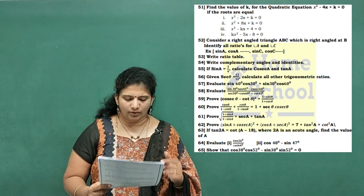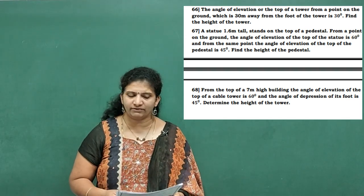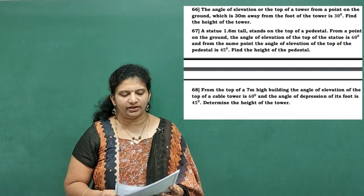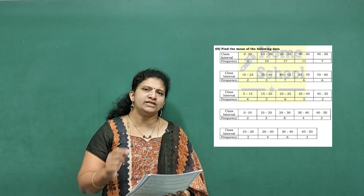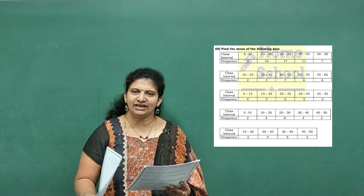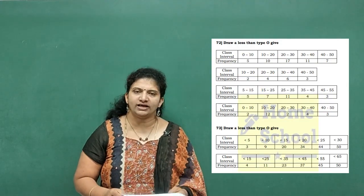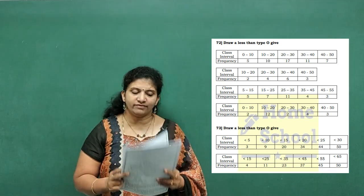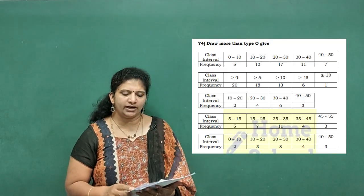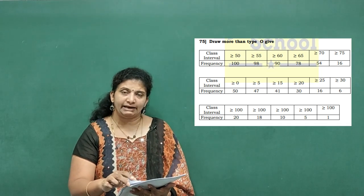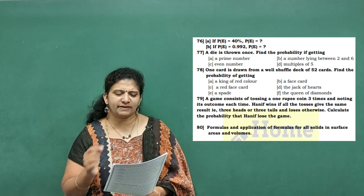Problems 66 and 67 are from Some Applications of Trigonometry, and problem 68 also. From problem 69 — Statistics: five problems for finding the mean, each done with one method. Problem 70: find the median — five problems. Mode — five problems. Problem 72: draw less than type ogive; different type given, observe carefully. Problems 73 and 74: more than type ogive. Problem 75: more than type ogive when greater than or equal to is given — how to solve.